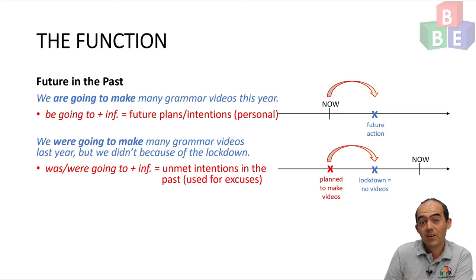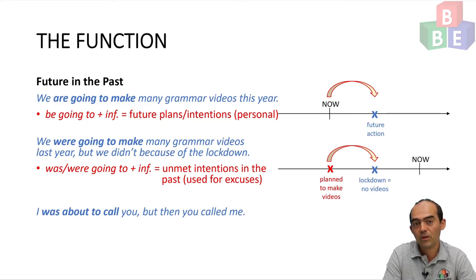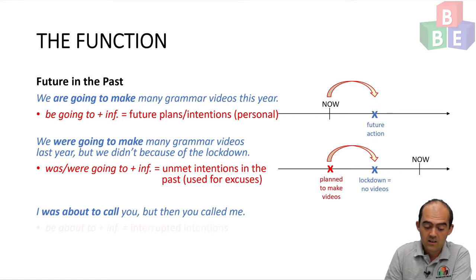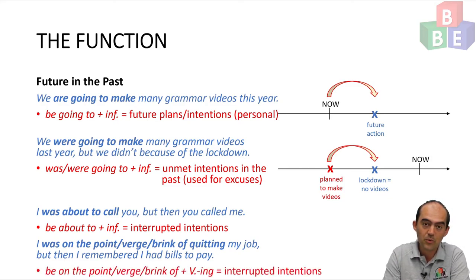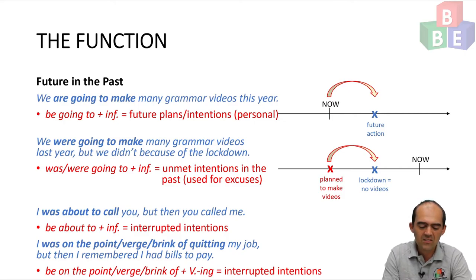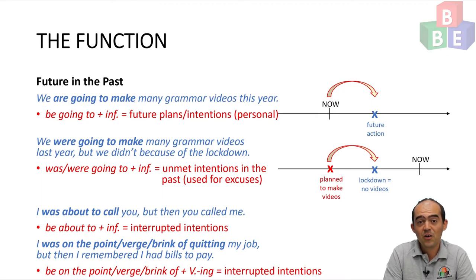In some cases, I might make a personal plan or intention in the past and it is interrupted. For example, 'I was about to call you, but then you called me.' In the past I had the intention of calling you, but before I could call you, you called me. Alternatively, 'I was on the point of / on the verge of / on the brink of quitting my job, but then I remembered I had bills to pay.' Here I am using be on the point of, be on the verge of, be on the brink of, plus verb -ing, to talk about interrupted intentions. To be on the point of, verge of, or brink of something is a little more exaggerated than be about to plus infinitive. If you want to review them for their general use, please check out the lesson on other expressions for the future.